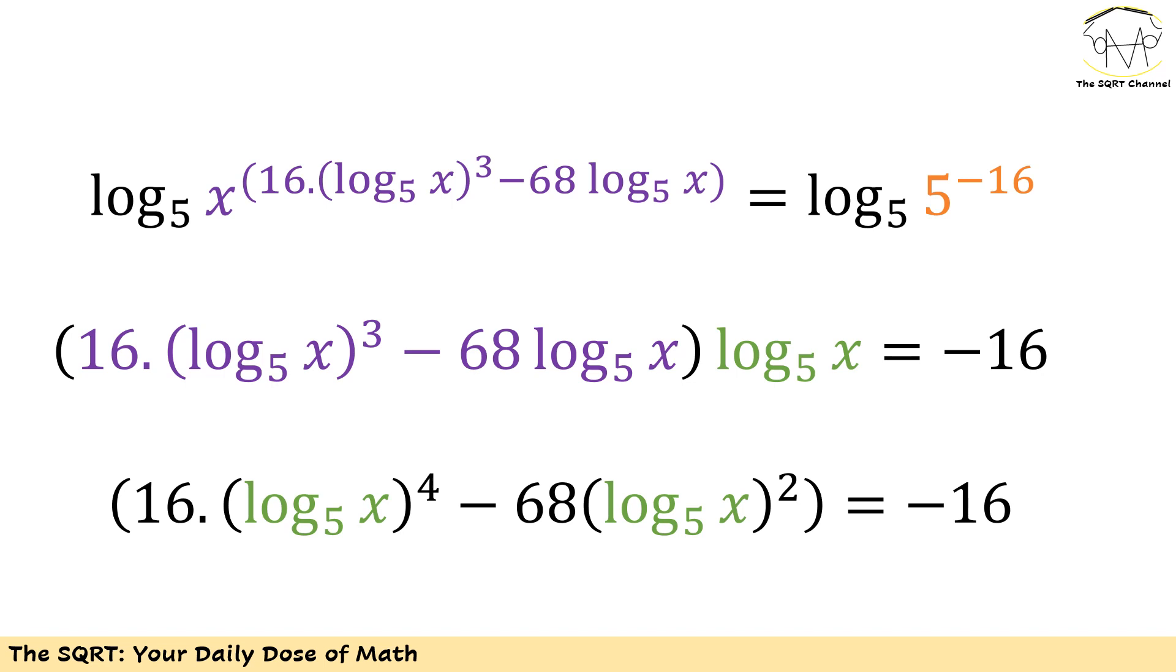On the left hand side I have log of x to the power of an expression in base 5. I can rewrite it as that expression times log of x in base 5, and for the expression itself I have two terms. I have 16 times (log_5 x)^3 and then I have 68 times log_5 x.